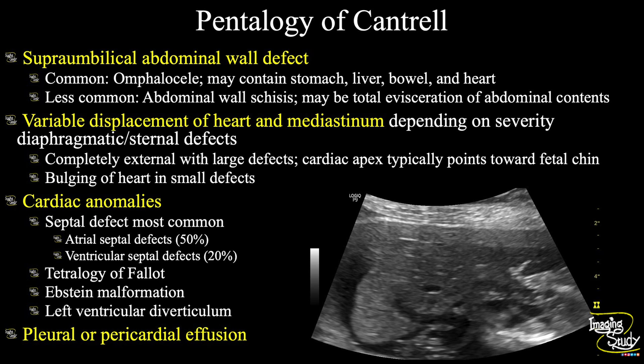You'll get a supra-umbilical abdominal wall defect — commonly omphalocele, but it might be gastroschisis as in this case, where we also had total evisceration of abdominal contents. There will be variable displacement of the heart and mediastinum depending on the severity of sternal and diaphragmatic defects. Cardiac anomalies are very common — commonly atrial or ventricular septal defects. You may also find tetralogy of Fallot, Ebstein anomaly, or left ventricular diverticulum. There may also be pleural or pericardial effusion.